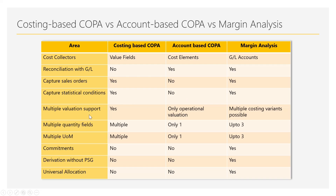Multiple valuation areas or valuation methods were supported in costing-based COPA, but only one operational valuation area was supported in account-based COPA. In margin analysis, multiple costing variants are now supported. For quantity fields, costing-based COPA could capture multiple quantities, account-based COPA supported only one, but margin analysis now allows up to three quantities and three units of measure.